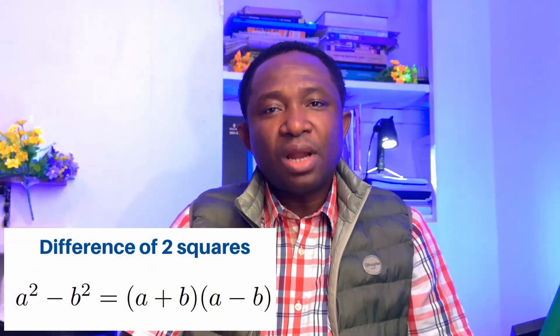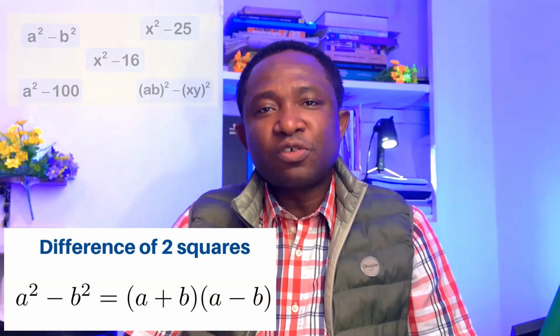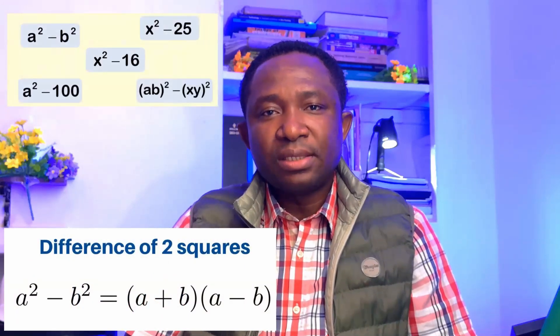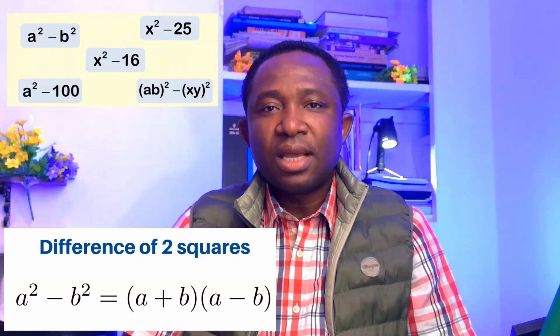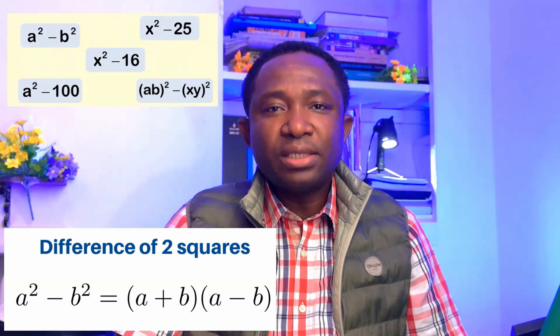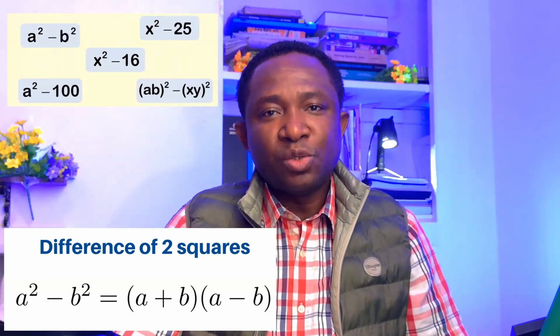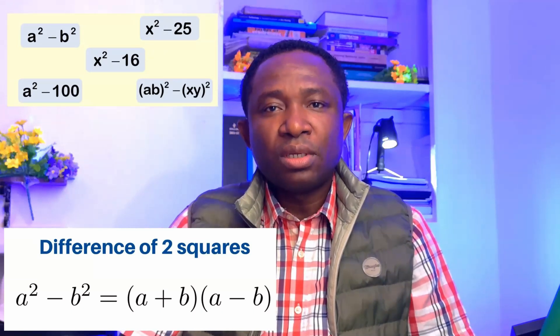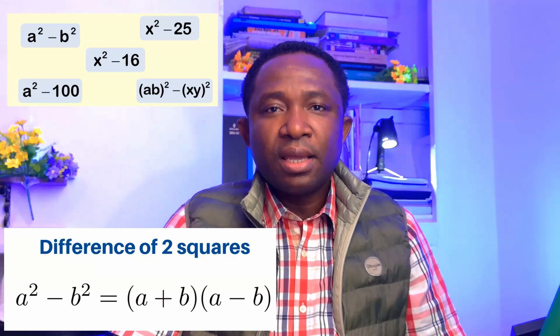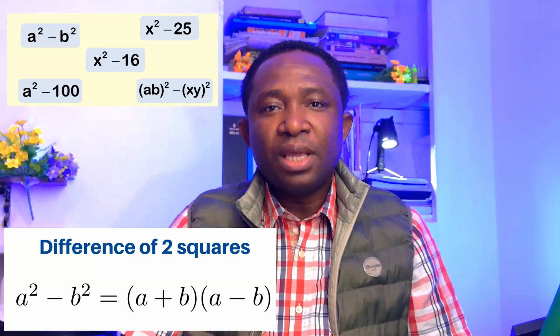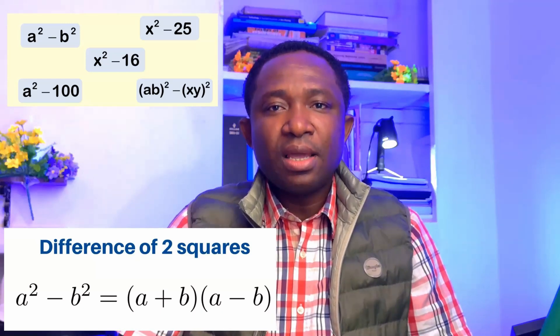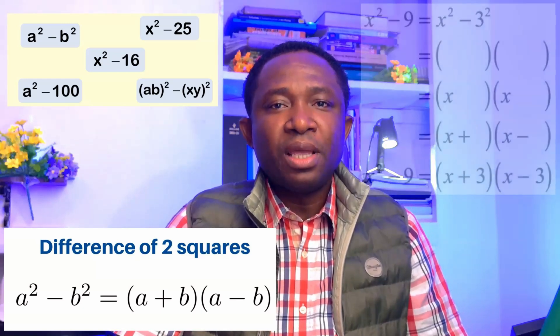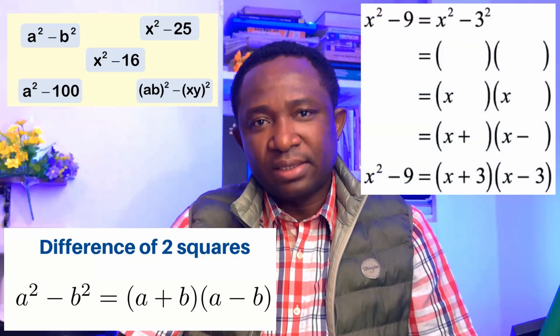The general formula for difference of two squares is: a squared minus b squared is equal to (a minus b) in brackets, times (a plus b) in brackets.